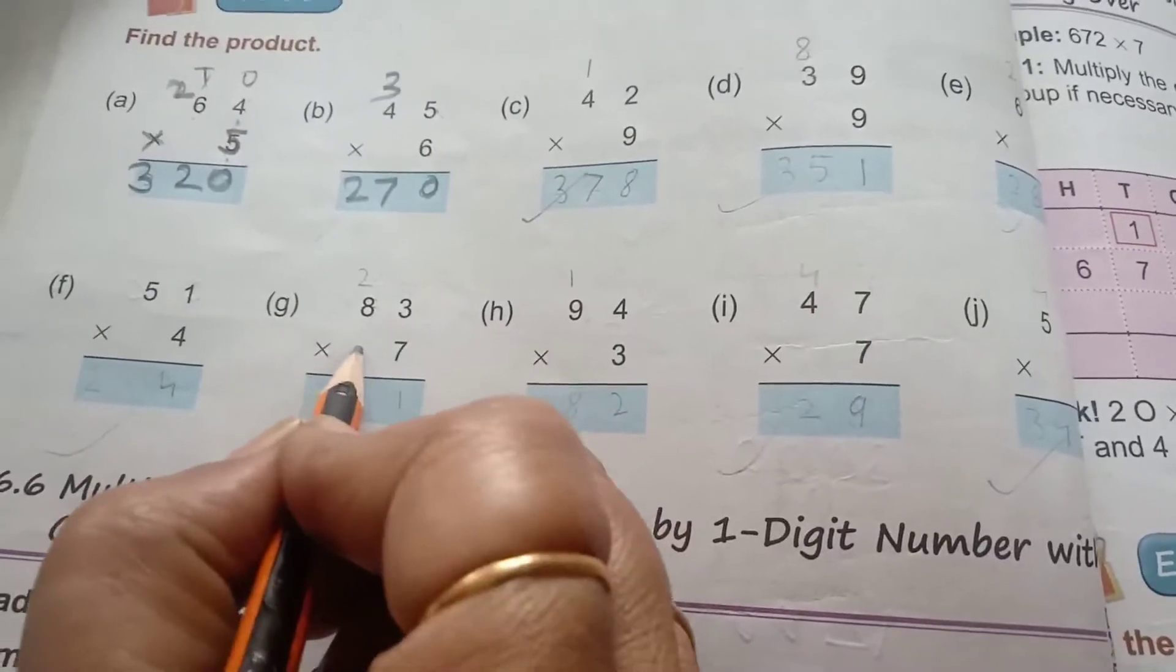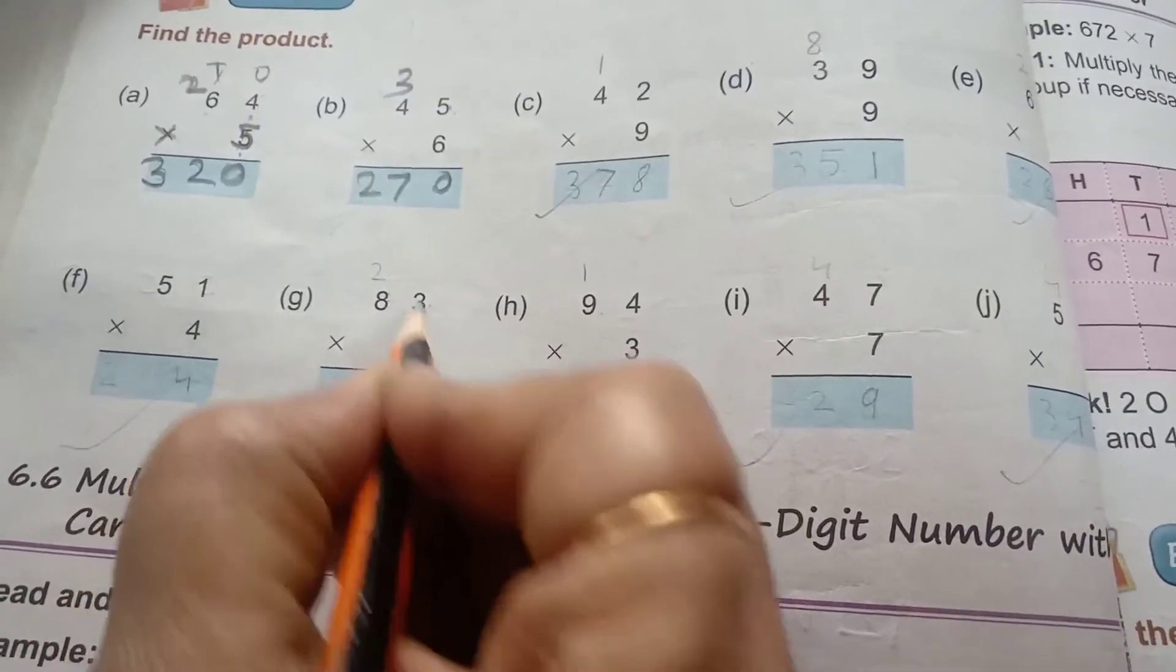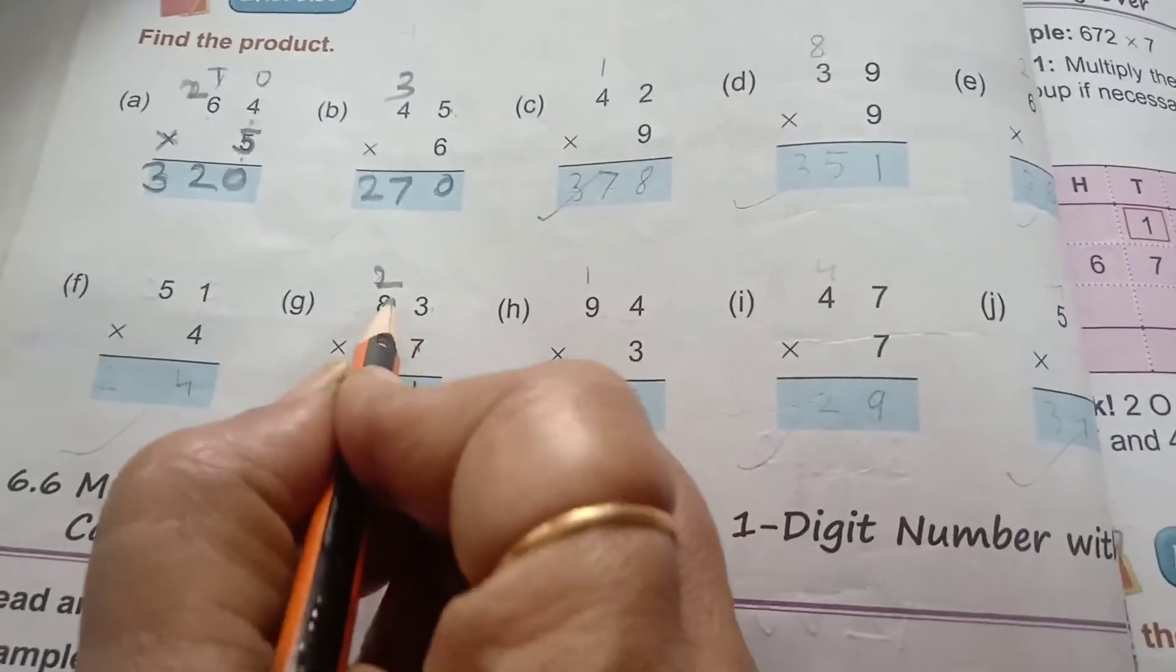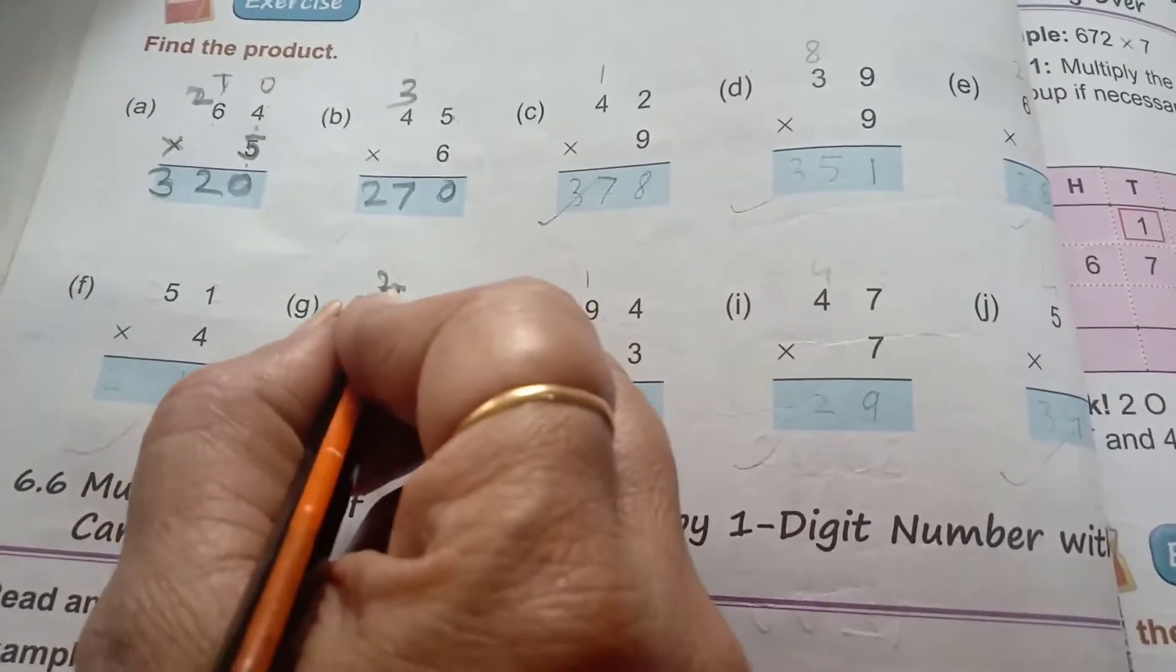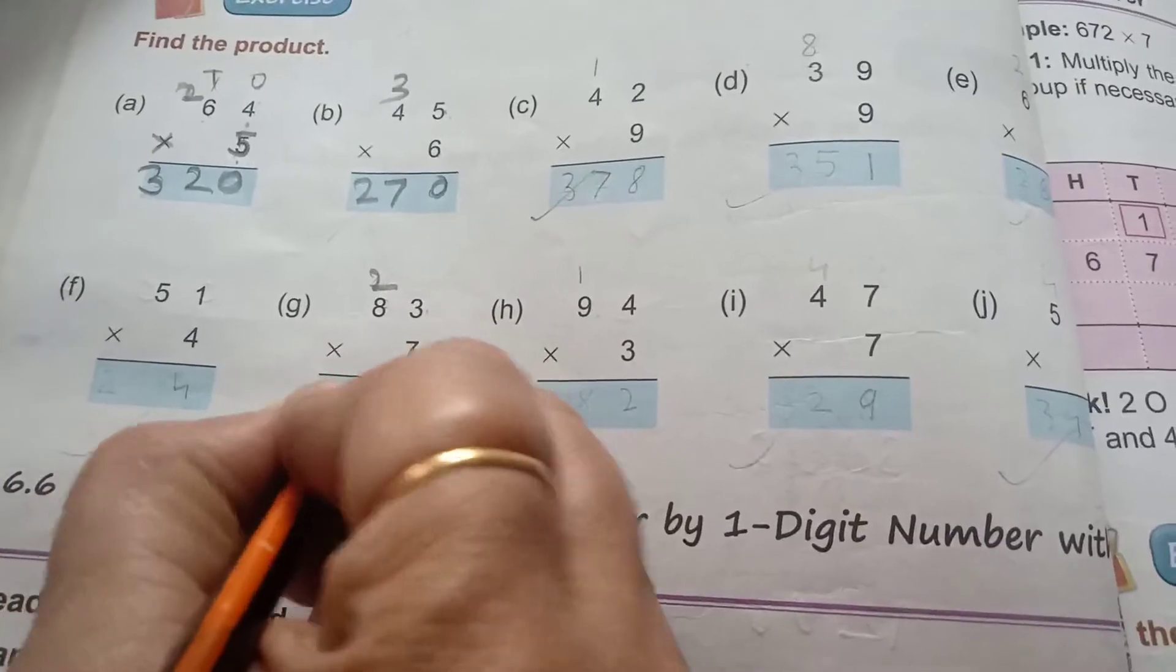Now, 83 into 7. 7 threes are 21. 7 eights are 56, plus 2, 58.